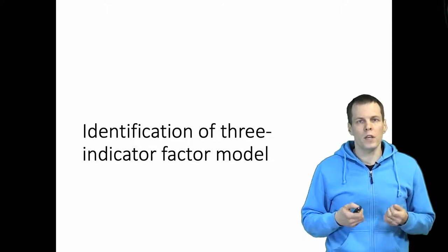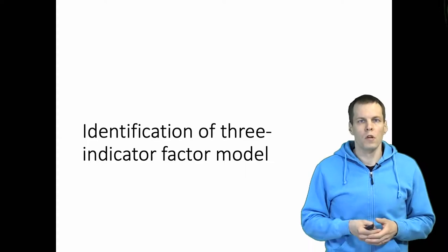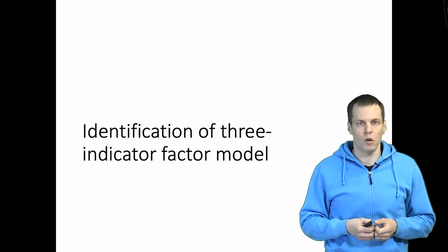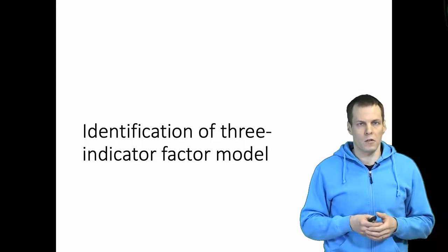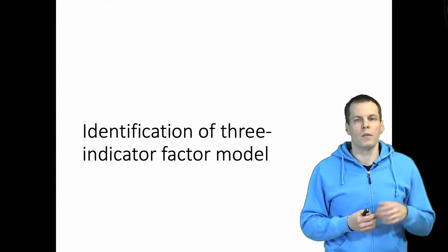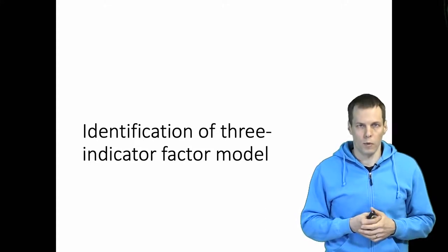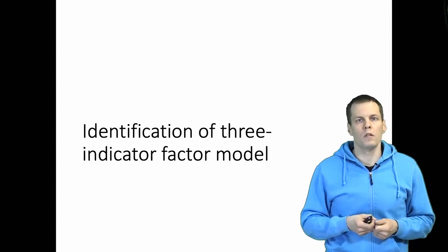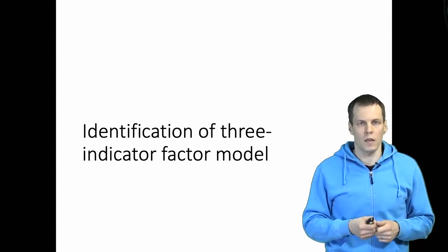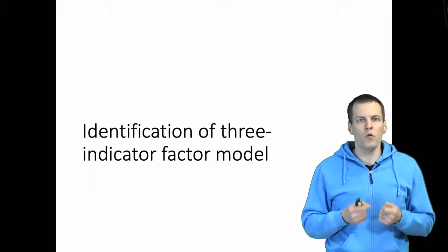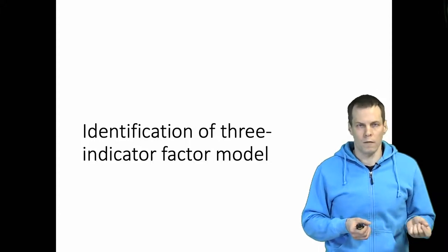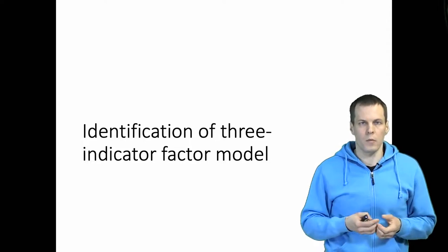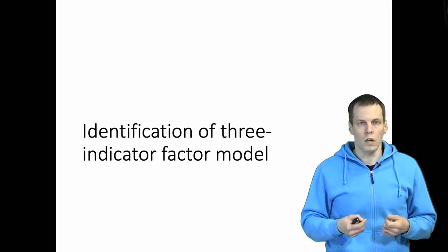Normally when you check identification you can apply certain rules — for example, a three-indicator factor is always identified — and there are other rules you can apply. But there are also scenarios not covered by those rules; for example, the identification status of bifactor models is more complicated than for normal models. In these scenarios it is useful to understand how identification can be proven, because that can help you determine if the model as a whole is identified or not.